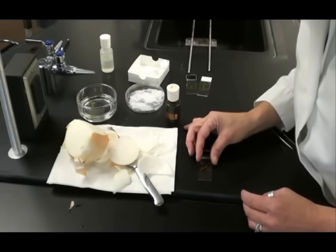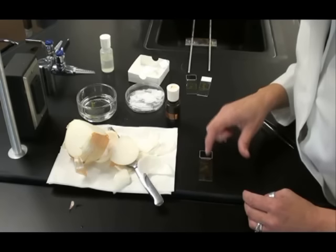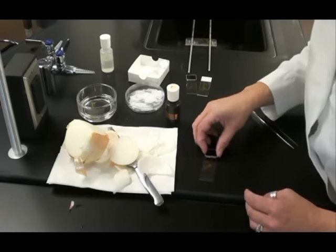The best way to apply that cover slip is to hold it at a right angle to the slide at one side of your specimen and then let it drop, let it fall. As it falls, it will push the air out and you'll have fewer air bubbles this way.